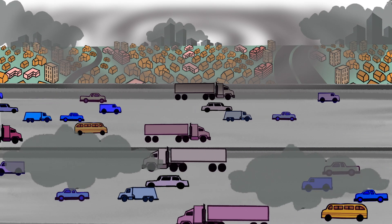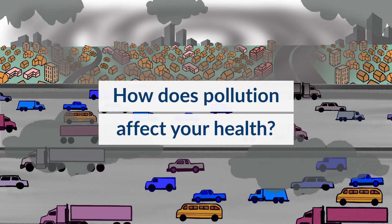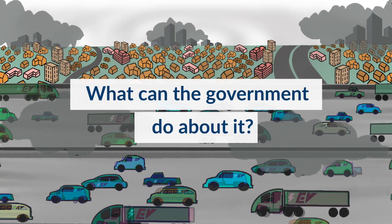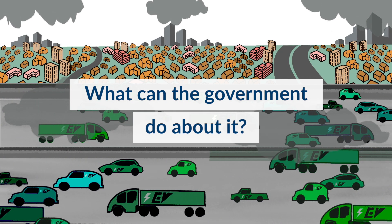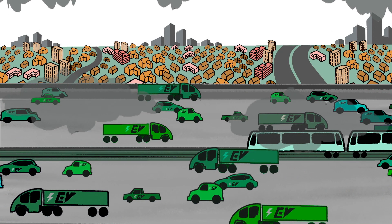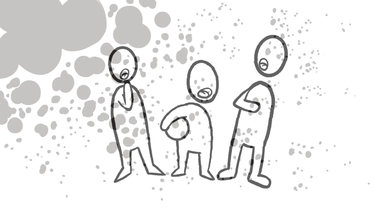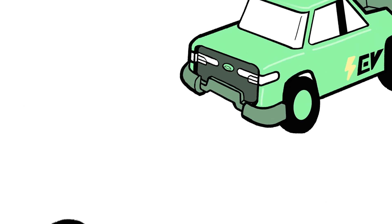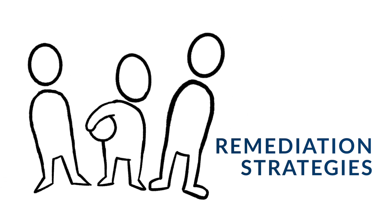Every day harmful air pollutants are released into California's air. How does that affect your health? What do government agencies do to limit your exposure to this pollution? In this video series, we will tell you about the various types of air pollutants, explain where they come from, and how they affect us. We will also describe some of the strategies that government agencies use to improve the air that you breathe.